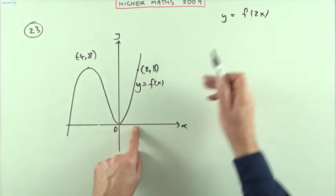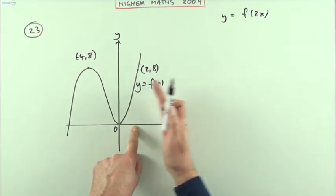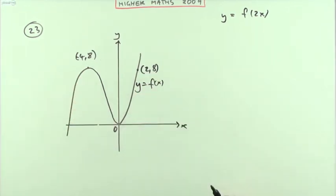If I want the answer at 2, I have to find the answer at 4 and bring it back, so it's getting brought back in, so it's going to be half the width.